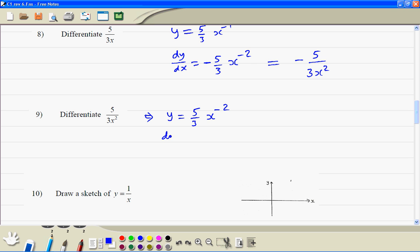Now, differentiate. So minus 2 times 5 thirds is minus 10 divided by 3, to the x to the power minus 3, which you can write as minus 10 over 3x to the power 3.